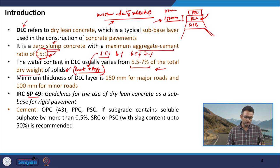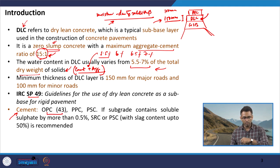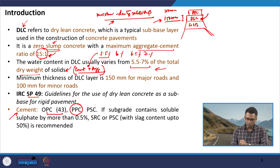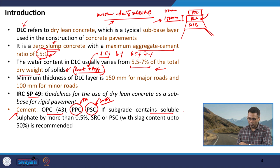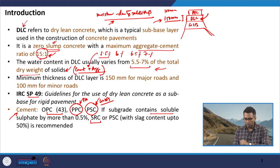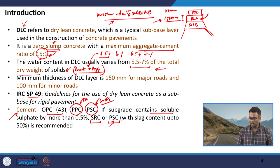The guideline being discussed is IRC SP 49, which describes the mix design process of dry lean concrete for rigid pavement. For cement, typically OPC 43 is used, but Portland Pozzolana Cement and Portland Slag Cement are also permitted. If the subgrade has soils containing more than 0.5 percent soluble sulphate, sulphate resisting cement or Portland slag cement with GGBFS content up to 50 percent should be used.